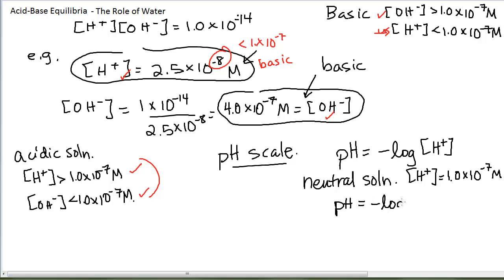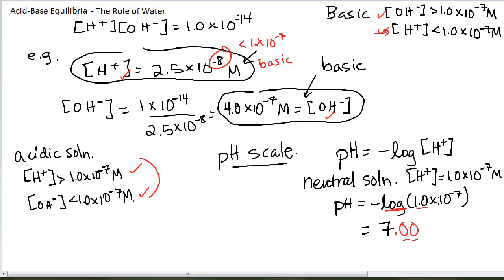The pH of a neutral solution is the negative log of 1 times 10 to the minus 7, which comes out to exactly 7. Regarding sig figs: when using logarithms, the rules are different from adding, subtracting, multiplying, and dividing. If I take the log of a number with 2 sig figs — for example, 1.0 times 10 to the minus 7 has 2 sig figs — then my answer should have 2 decimal places. So a neutral solution has a pH of 7.00.